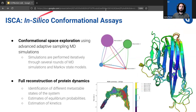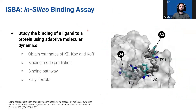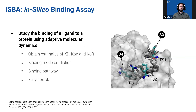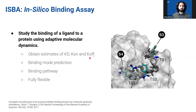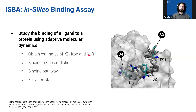In silico binding assays similarly involve extensive simulations on the order of hundreds of microseconds, but the objective is to simulate a whole binding event between a protein and a small molecule. By simulating the whole binding event and performing Markov state model analysis, you can obtain a full model of the binding event and different metastable states, and predict properties such as binding affinity and kinetic properties like K-on and K-off. K-offs are harder to obtain since for good ligands these timescales are very slow, but binding affinities and K-ons are perfectly doable.